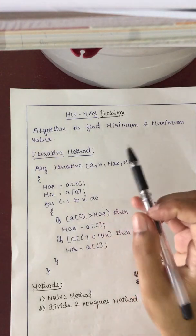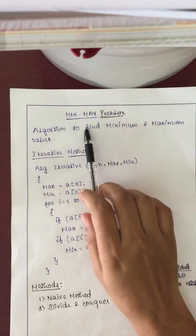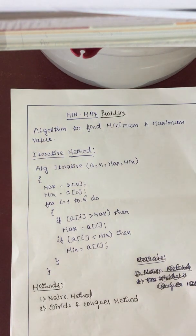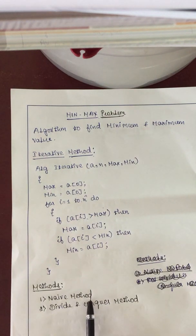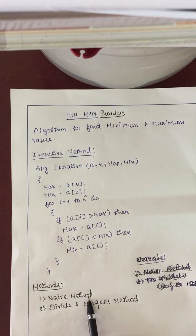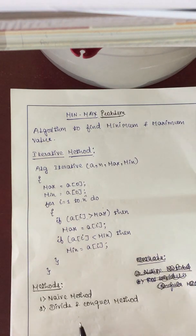In this video we are going to discuss how to find the minimum and maximum element in a given array. To find the maximum and minimum element in a given array, the following methods can be used: the first one is the naive method, and another one is the divide and conquer method. The naive method is nothing but the iterative method — it is the basic method to solve any problem.